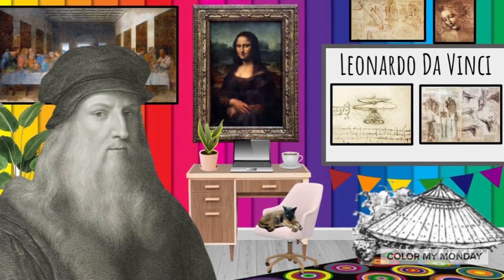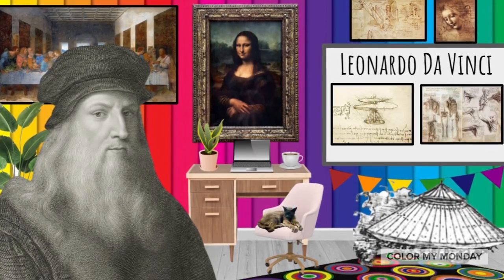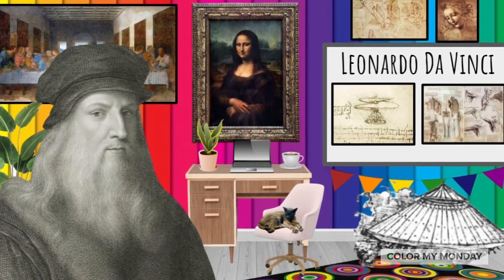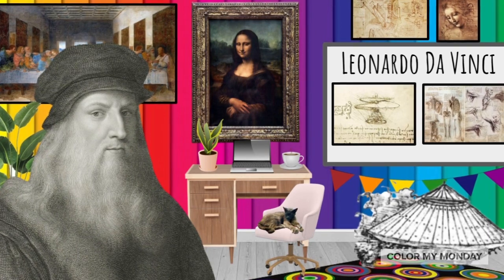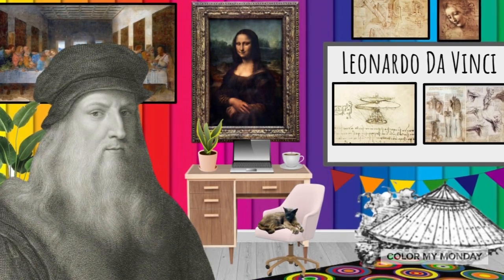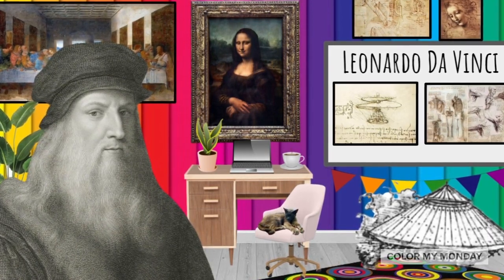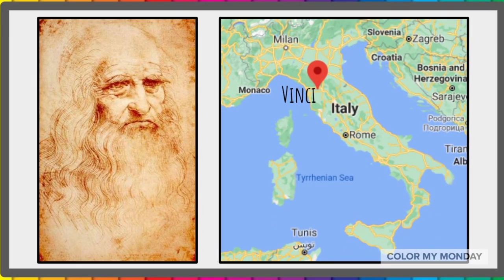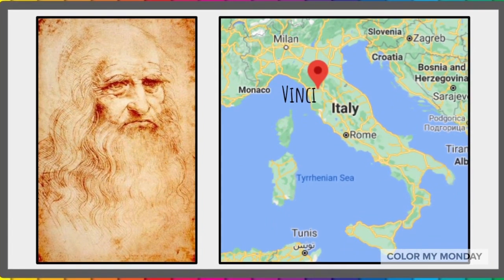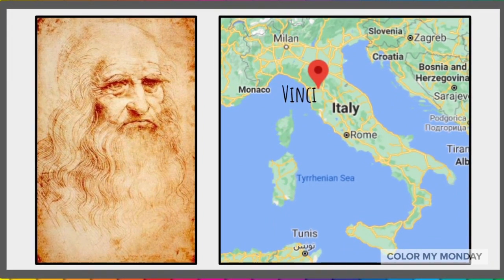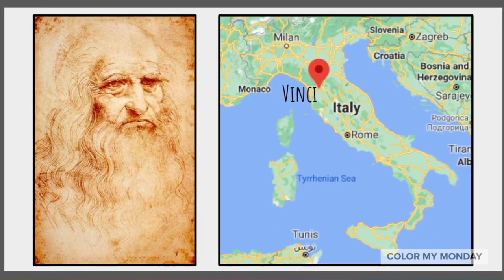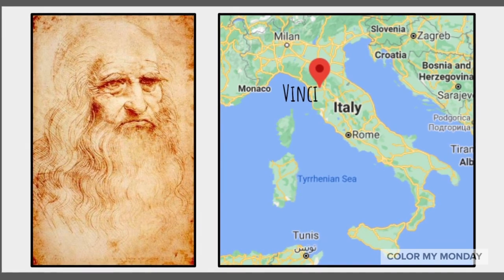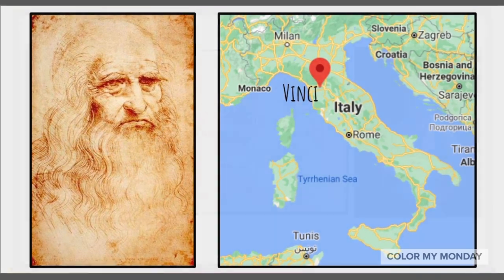Leonardo da Vinci was a brilliant artist, scientist, and inventor who lived from 1452 to 1519. He was from a town in Italy called Vinci, so his name, Leonardo da Vinci, means Leonardo of Vinci.